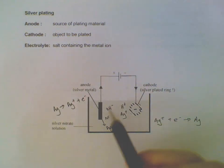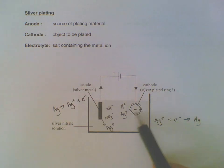So as time goes on, the anode will get smaller and smaller and the ring will have a coating of silver metal.